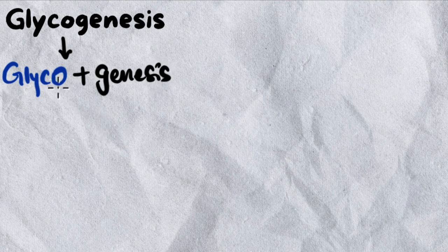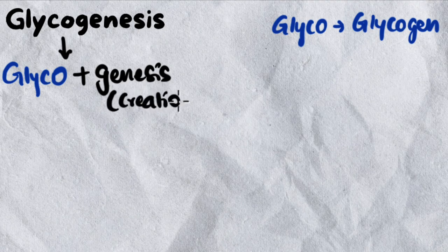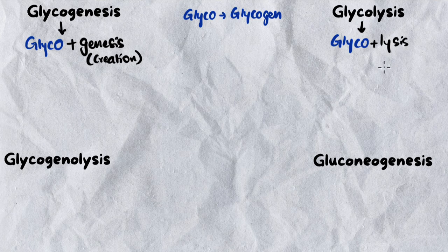So 'glyco' stands for glycogen, and 'genesis' means creation. I thought this should logically mean glycogen creation — and that makes sense! Then by the same logic I thought 'glyco' would be glycogen, and 'lysis' means breaking things down, so glycolysis should be breaking down glycogen. I was feeling smart about myself.